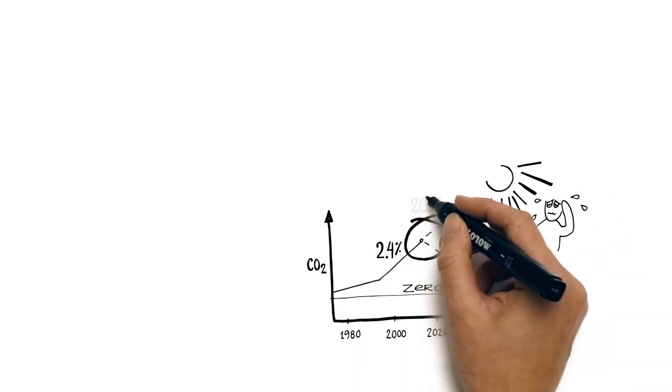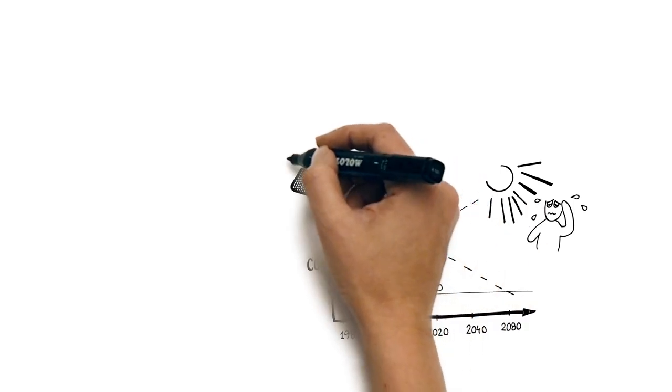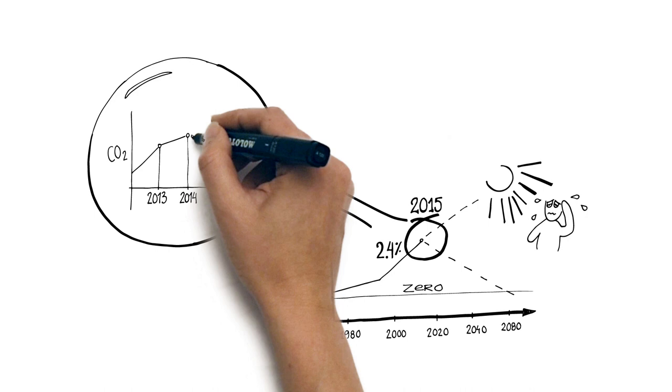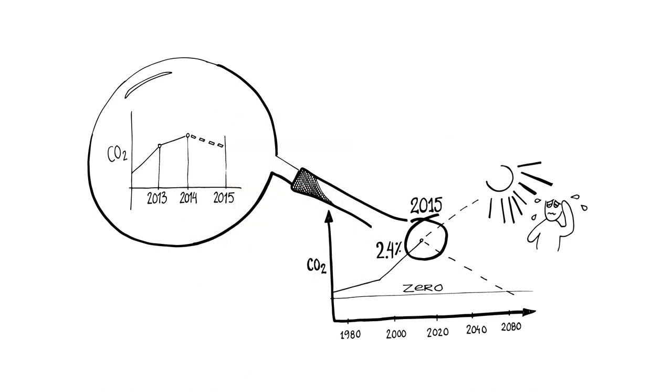Yet this year, it looks like global emissions might have taken a different turn. Emissions in 2014 grew much more slowly, and they might have even declined in 2015.